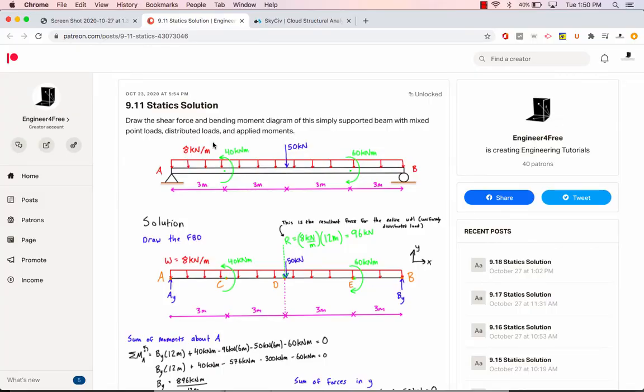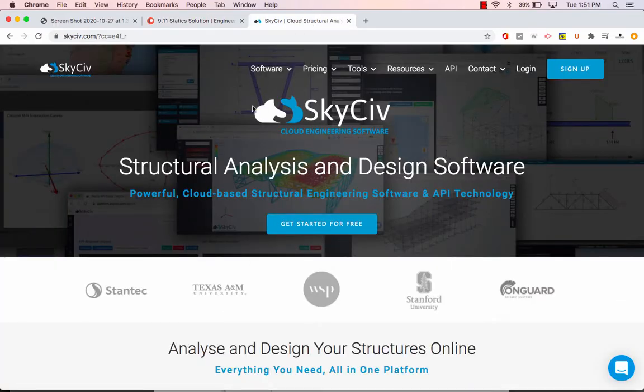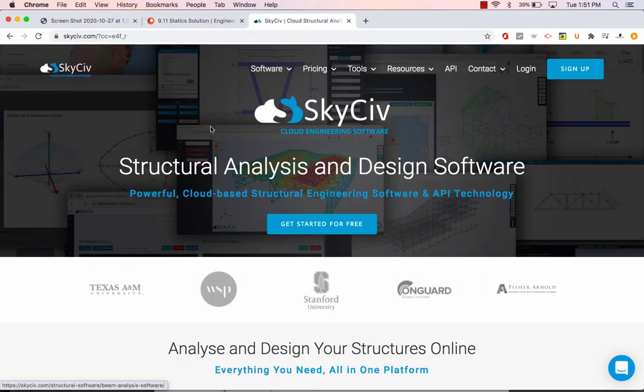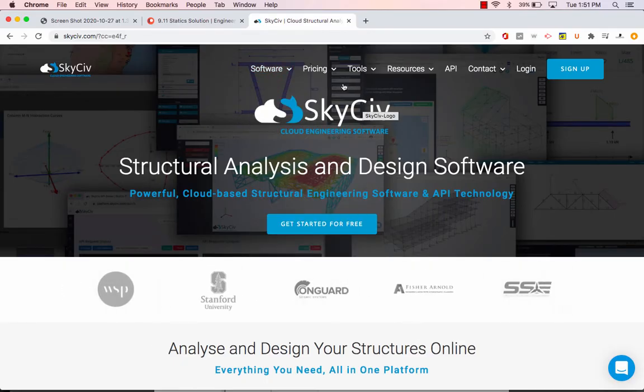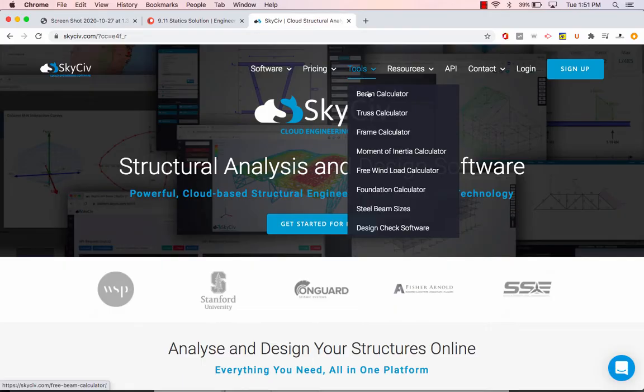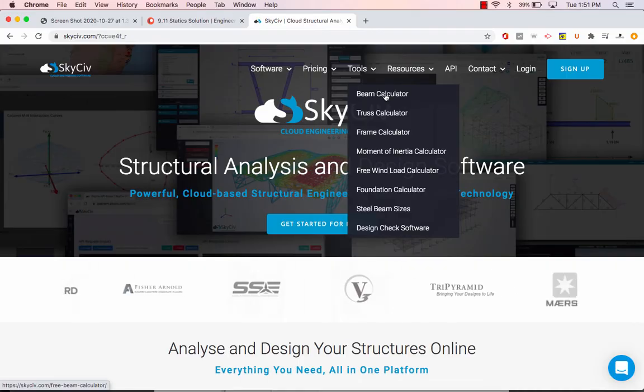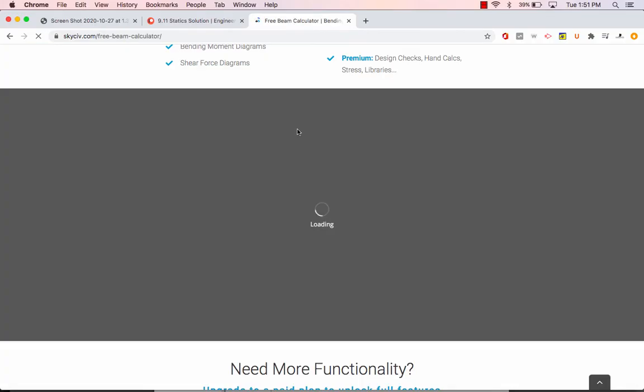It's called SkyCiv. There's a link in the description. When you come to the home page, they have a lot of stuff going on, but basically what we want to do is just jump straight to the tools here. In this example we're going to be looking at the beam calculator. There's a lot of other tools, but maybe that's for another day. So click beam calculator and it's going to open us up right here.